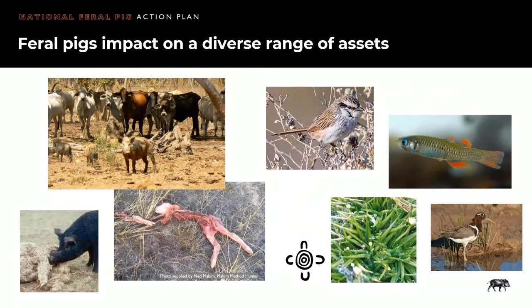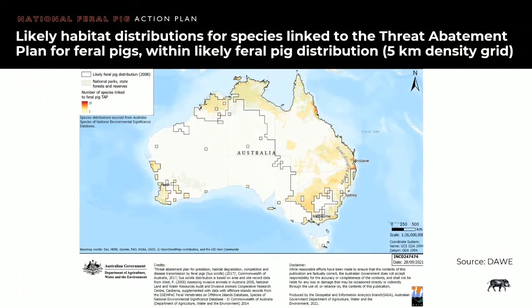Disease impacts are often hidden. Feral pigs also impact on the environment, cultural values and social assets. Through their activities around artesian springs, feral pigs impact on at least four endangered species in the Desert Channels Queensland region — the red-finned blue eye, the Australian painted snipe, the grey grasswren and salt pipewort — as well as impacting the biodiversity of wetlands and freshwater ecosystems. The management of feral pigs is also mentally straining and can be overwhelming due to the time, effort and cost required to maintain consistent control efforts. This figure from the Department of Agriculture, Water and the Environment overlays likely habitat distributions for species linked to the threat abatement plan within the feral pig distribution map to graphically show impacts on biodiversity across Australia.